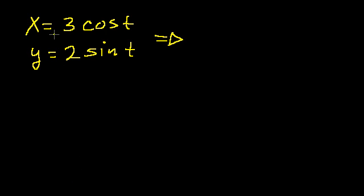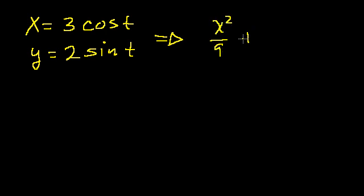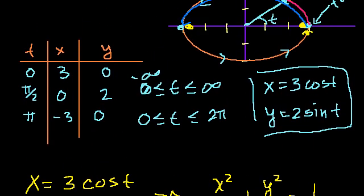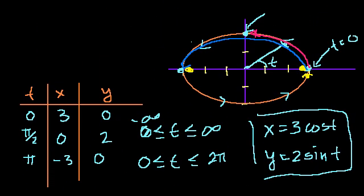In the last video, we started with these parametric equations: x is equal to 3 cosine of t and y is equal to 2 sine of t. And doing a little bit of algebra, we were able to remove the parameter and turn it into an equation that we normally associate with an ellipse. We got x squared over 9 plus y squared over 4 is equal to 1. And we graphed it, and we got something that looked like that right there.